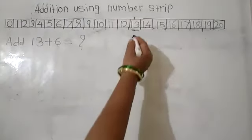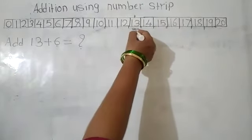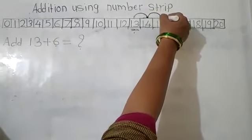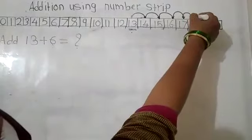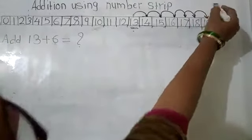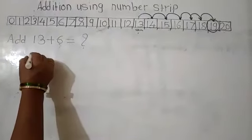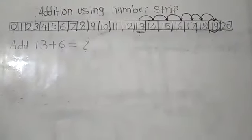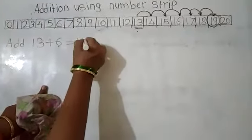Start from 13 and go forward 6 steps. Let's count: 1, 2, 3, 4, 5 and 6. We moved 6 steps forward and we reach 19. So we get the answer 19. Here, 13 plus 6 is equal to 19.